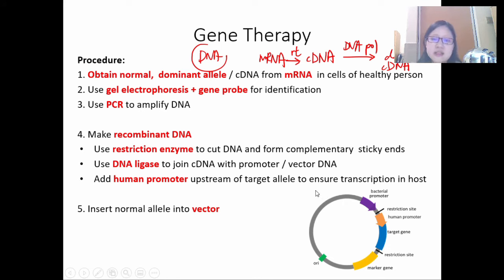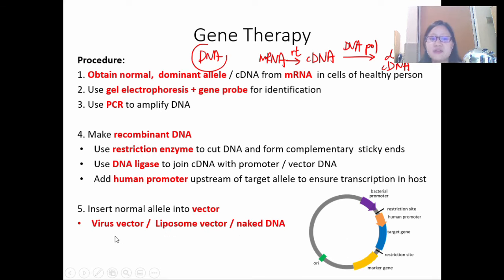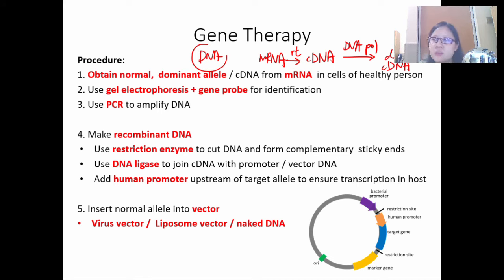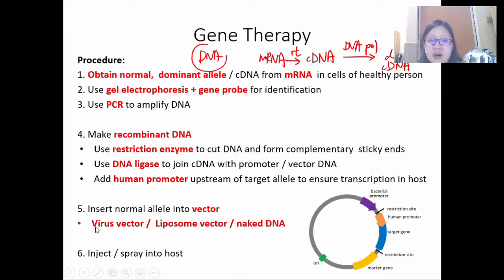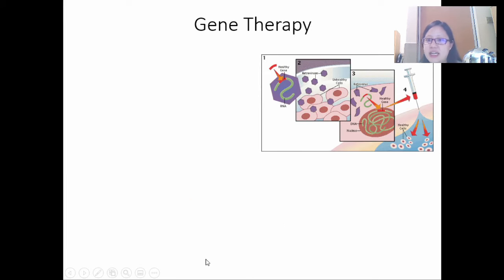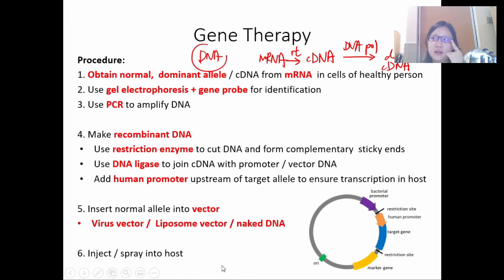Make many copies of the plasmid using gene cloning, then take this plasmid with the normal allele and insert it into a vector — either a virus vector, liposome vector, or naked DNA. Inject or spray that vector into the host or into the affected area, hoping the cells take it up, express the protein, and function more normally.